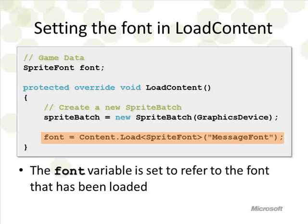This turns out to be one line — one statement to go off and get it. We say: that's where we're going to put the stuff, I want to load the content, it's a SpriteFont I'm fetching, and it's called MessageFont. I'm getting it from the Content Manager, which is the thing that looks after our content pipeline. Bottom line: we add this one line of code to our program and that's all we have to do.